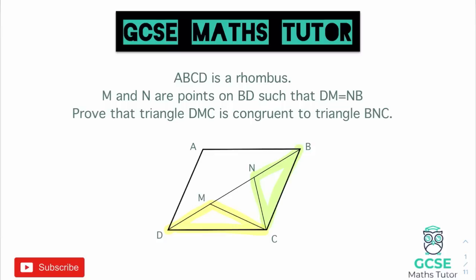When looking at congruent triangle proof, we have to think about our congruent triangle rules. For the first thing, something is often given to us in the question. The first line tells us it's a rhombus, and we know that all sides of a rhombus are the same length. Looking at these two triangles, we can apply that to our proof — the line BC and the line DC are the same length. So our first bullet point: BC is equal to DC, because the sides of a rhombus are equal. That gives us a side.